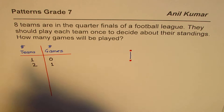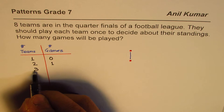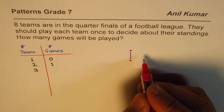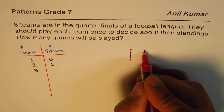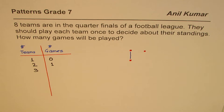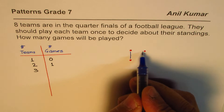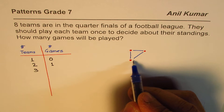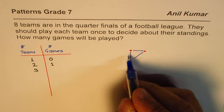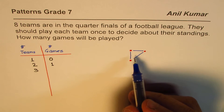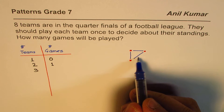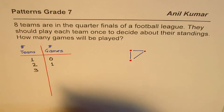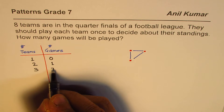When the third team joins in, this team can play with the first and the second team. Every team plays with one another just one game. So the number of games being played is one, two, and three — so it is three games for three teams.